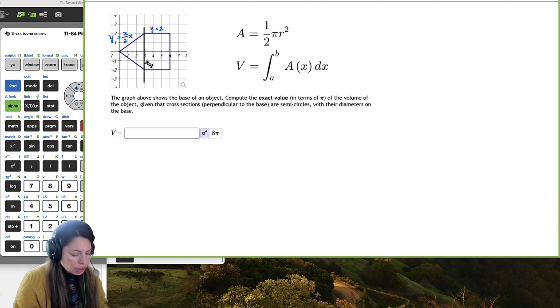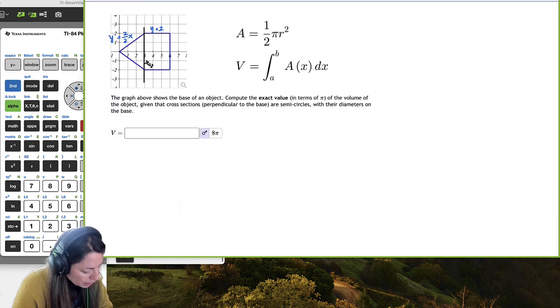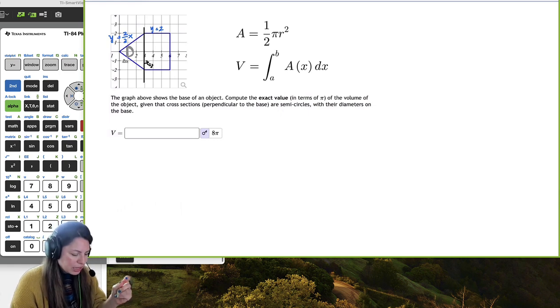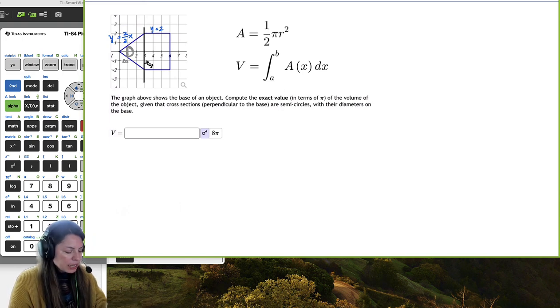Now our cross sections are semicircles. So what will be interesting here, if I just take it right here, there's the semicircle. And we can see that the thickness is going to be delta x or dx. However you want to write it, that's the thickness. But then the semicircle, the diameter lies right there in being symmetric about the x-axis.